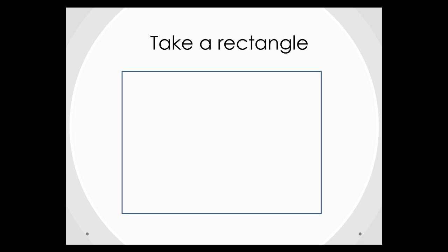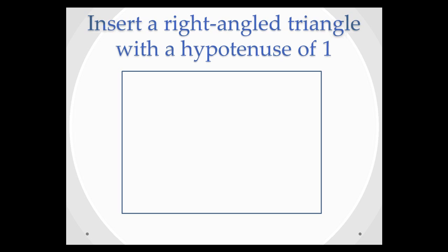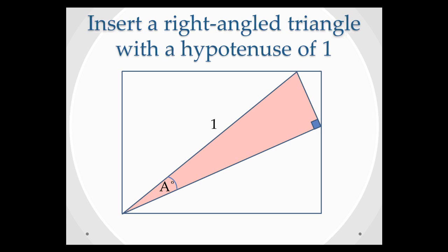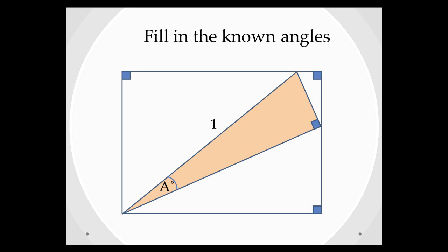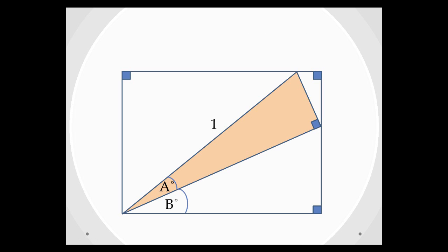We're going to start off by taking a rectangle, and into this rectangle we're going to place a right-angle triangle with a hypotenuse of 1. If we name the angle down here A, then we can note that all the corners of our rectangle are going to be 90 degrees. And if we name the angle at the bottom here B, then we can start naming everything else in relation to the information we have on the screen.